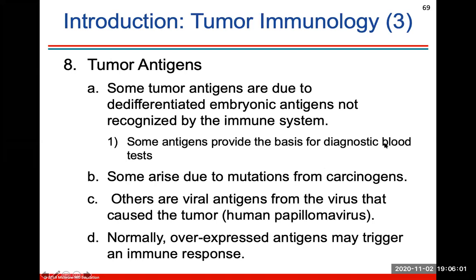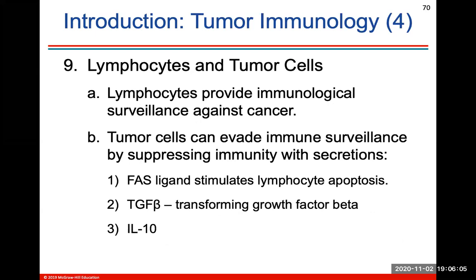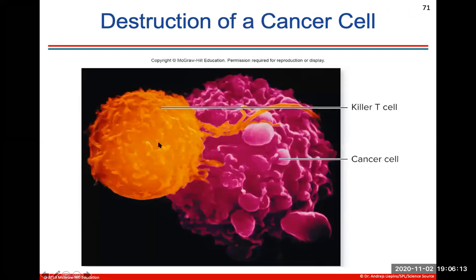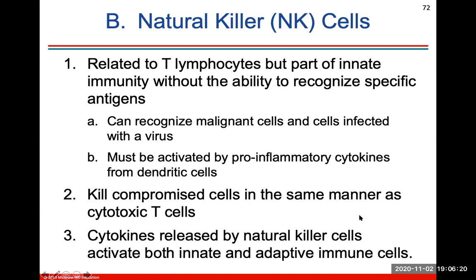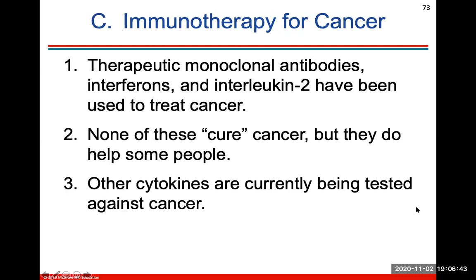Regarding tumor antigens: a killer T cell will attack the cancer cell. Natural killer cells are related to T lymphocytes but are part of innate immunity without the ability to recognize specific antigens; they will kill compromised cells in the same manner as cytotoxic T cells. Cytokines will release natural killer cells and activate both innate and adaptive immune cells. Therapeutic monoclonal antibodies, interferons, and interleukin-2 have been used to treat cancer, though none can cure it — they do sometimes help people, and other cytokines are currently being tested.